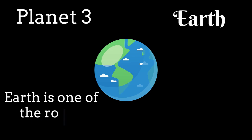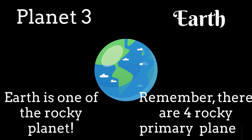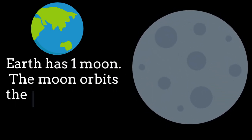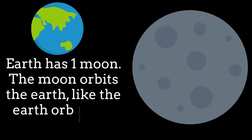Earth is the only planet we know of that has oceans and life on it. Earth is one of the rocky planet. Remember, there are 4 rocky primary planets, and Earth is one of them. Earth has one moon. The moon orbits the Earth, like the Earth orbits the Sun.